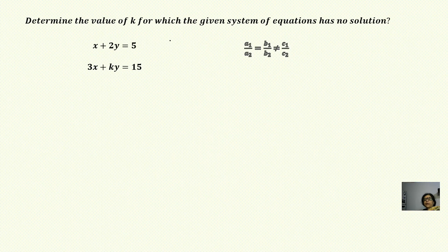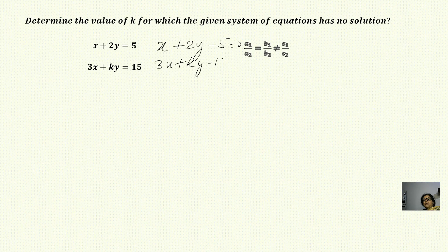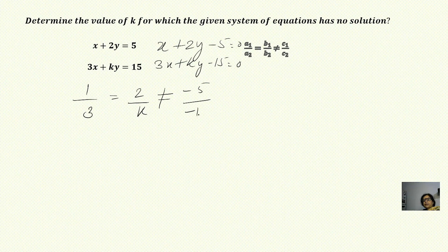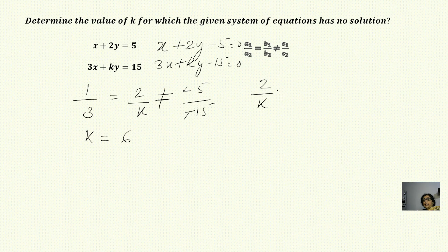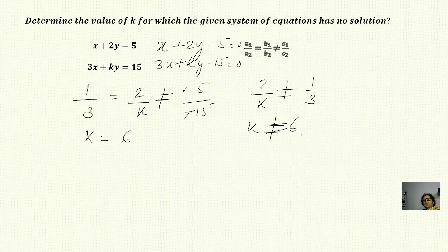The next question again asks for no solution. Rewriting: x + 2y - 5 = 0 and 3x + ky - 15 = 0. Applying the condition 1/3 = 2/k ≠ 5/15, from the first two proportions k = 6, but from the second and third, 2/k ≠ 1/3 means k ≠ 6. The two conditions contradict each other, so there is no particular value of k for which this system has no solution.